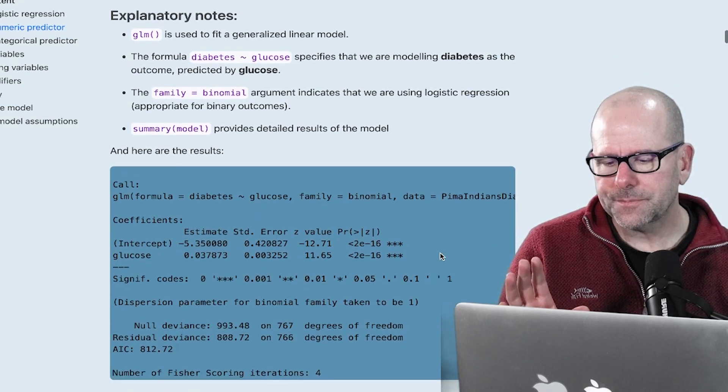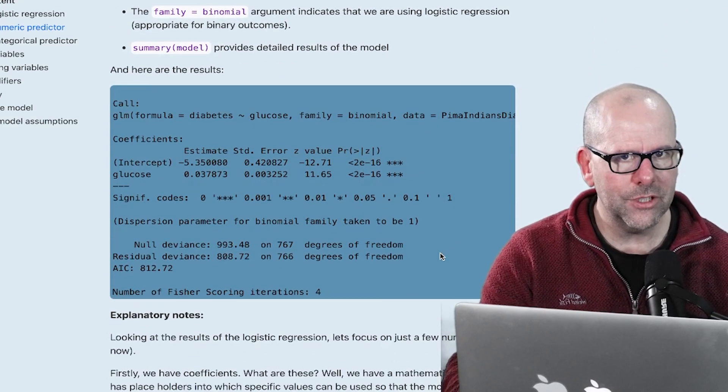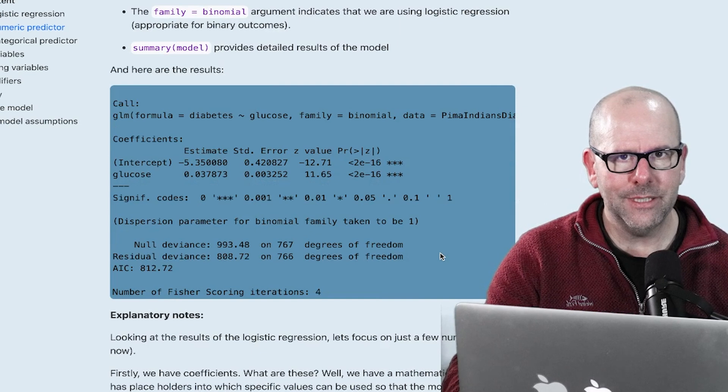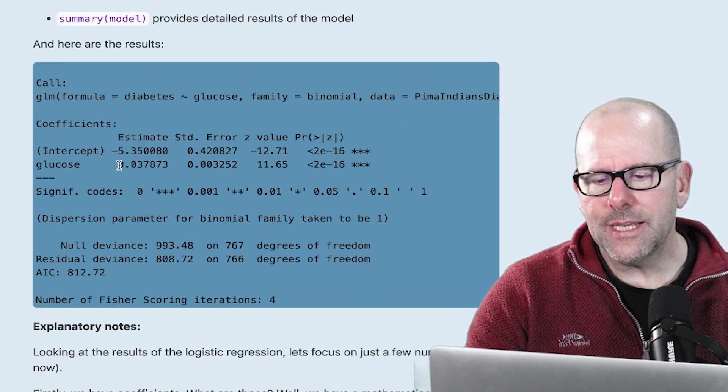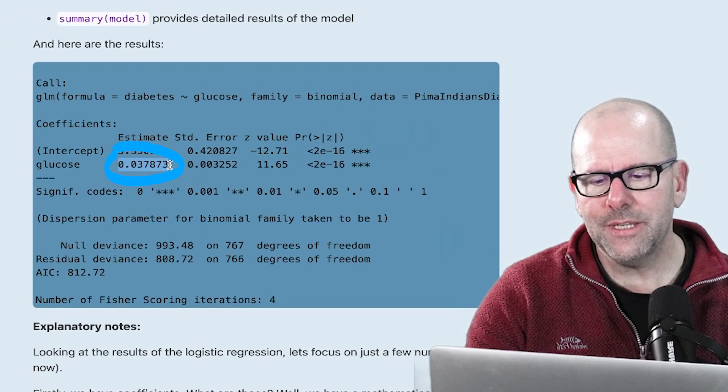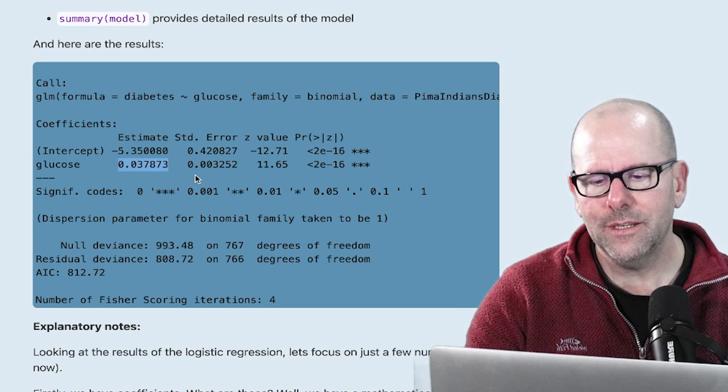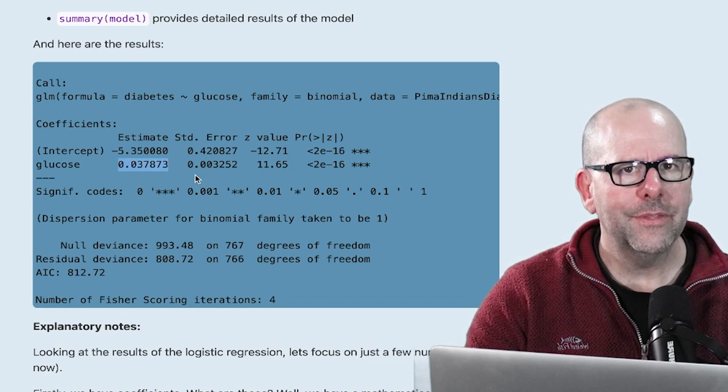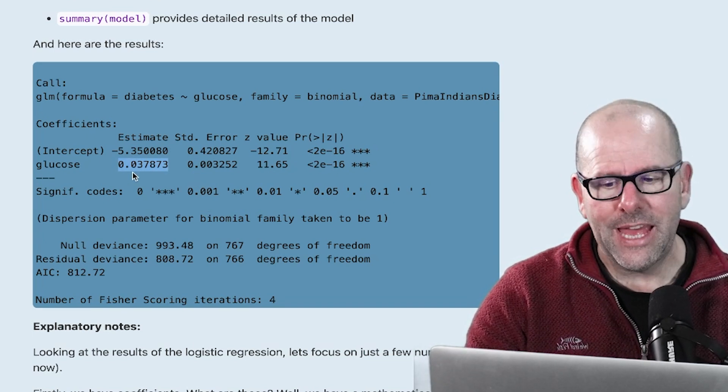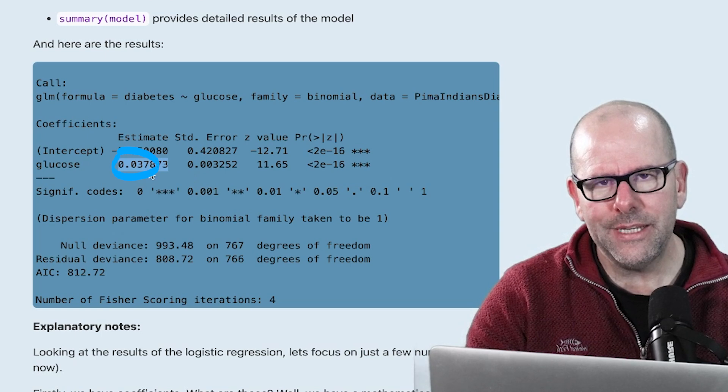We created a model. In the first instance, we got a model here of glucose. The reason I'm looking at glucose by itself first will become apparent in just a few seconds. Glucose has a positive relationship because the estimate here is positive and it's statistically significant. Because it's positive, we know that as glucose goes up, the likelihood of diabetes goes up. And look at the number. It's 0.37.